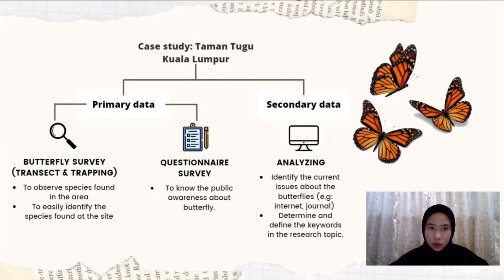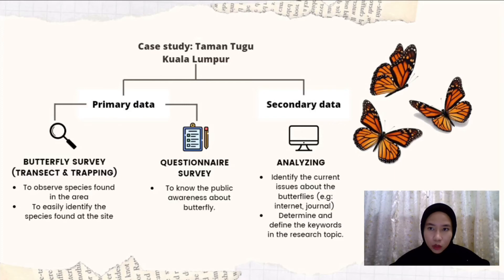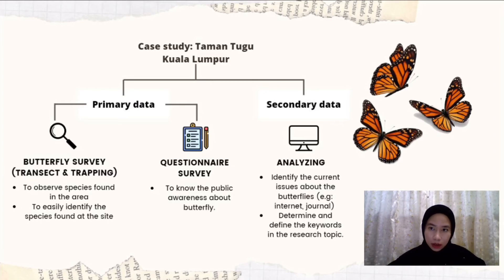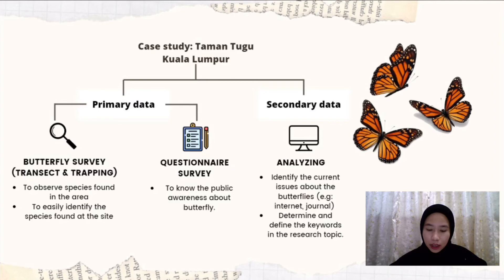For the methodology, there are two types of data: primary data and secondary data. Primary data is obtained from a butterfly survey and a questionnaire survey. Secondary data is obtained from journals, books, articles and newspapers. Two methods were used in the butterfly survey: transect technique to observe the species found in the area, and a trapping method to easily identify the species. For the questionnaire survey, we distributed a link via Google Form to urban communities to assess public awareness about butterflies.